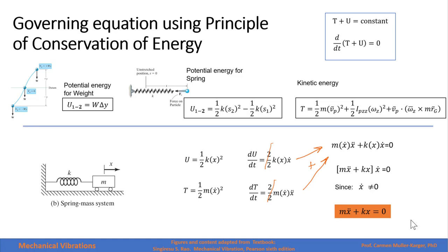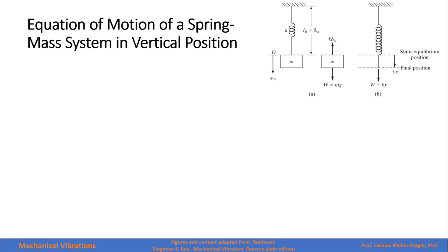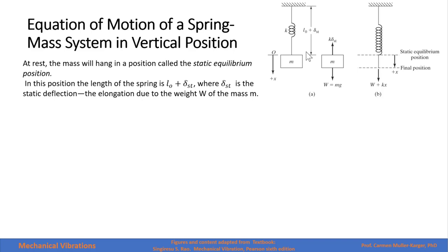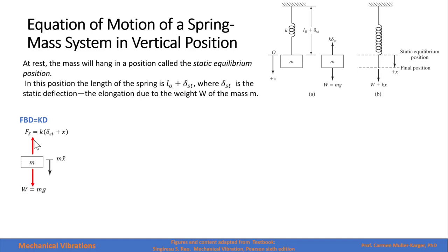Now let's work on the equation of motion of a spring-mass system in vertical position. At rest, the mass hangs at the static equilibrium position where the upward spring force exactly balances the downward gravitational force. The elongation due to weight is called the static deflection, and the total elongation of the spring is the unstretched length plus the static deflection — this is the static equilibrium position.